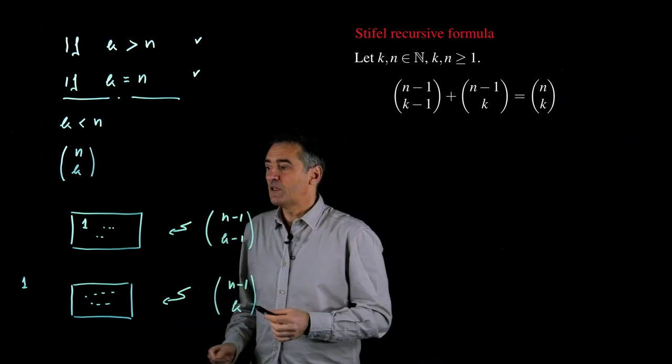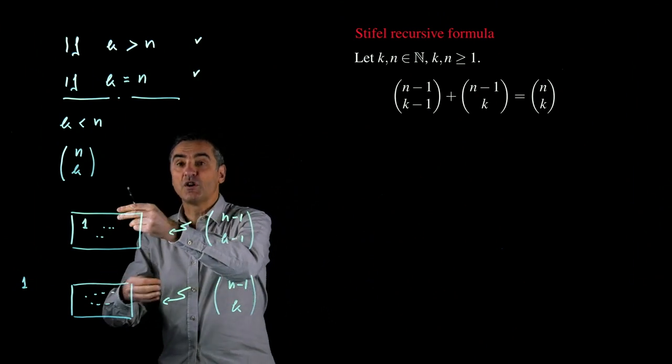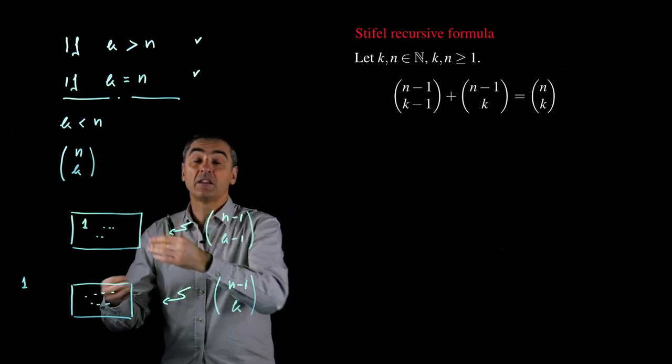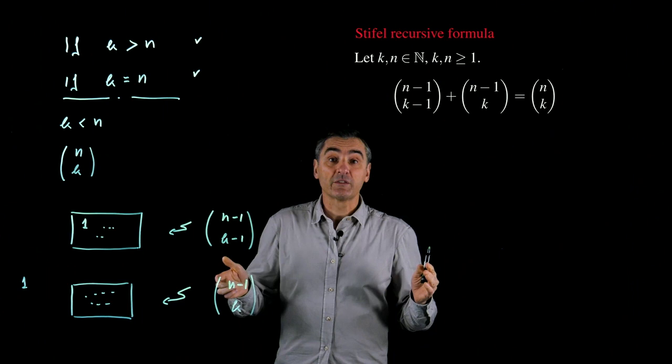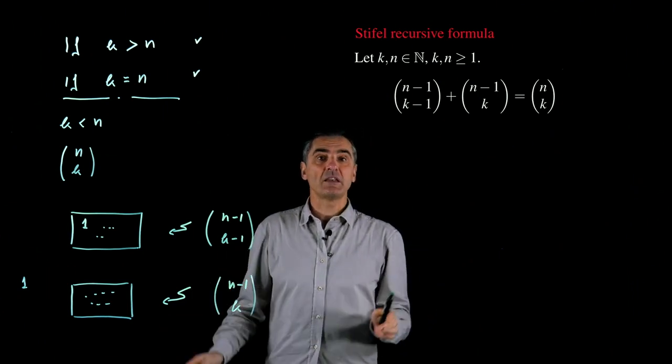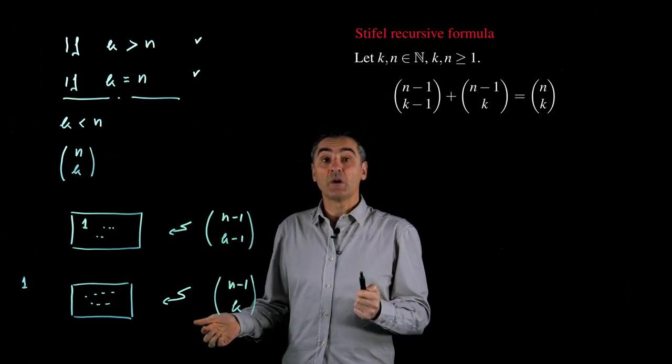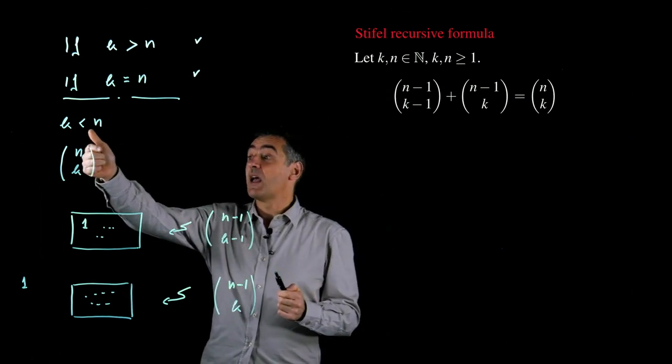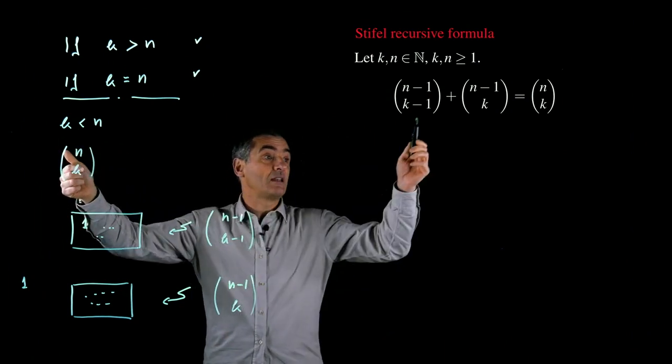Of course, if you consider the union of these two possibilities, then you get all the possible choices of k numbers among n numbers. Then, what we have? We have that n over k, which is the number of possible choices of k numbers among n,